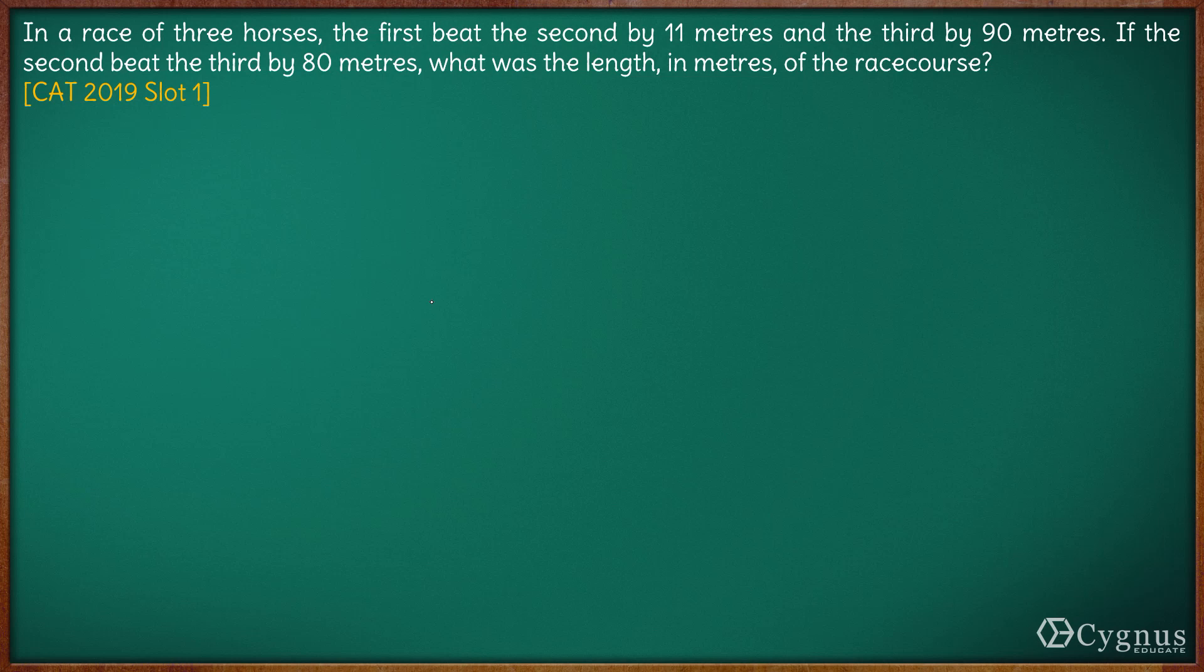Hi, here in this question we have in a race of three horses, the first beat the second by 11 meters and the third by 90 meters. If the second beat the third by 80 meters, what was the length of the track?